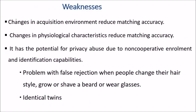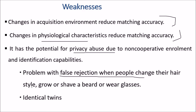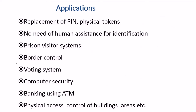Weaknesses include: changes in the acquisition environment reduce matching accuracy; changes in physiological characteristics also reduce accuracy; there is potential for privacy abuse due to non-cooperative enrollment and identification capabilities. False rejection is a problem when people change their hairstyle, face shape, beard, or wear glasses, and identical twins remain a challenge.